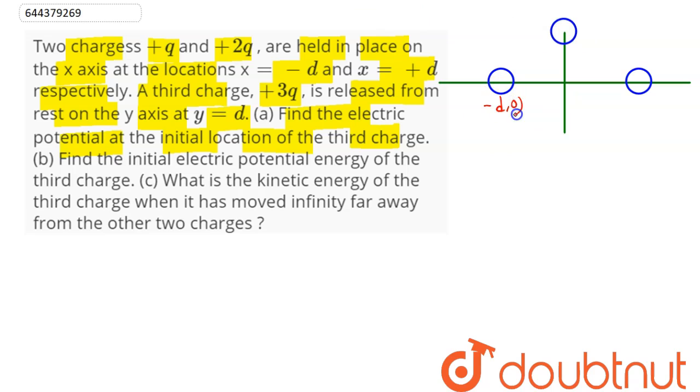So, at minus d comma 0 we have the charge as plus q, and 2q charge here is at d comma 0, and we can say here on y-axis that is at 0 comma d, here we have the charge as plus 3q.